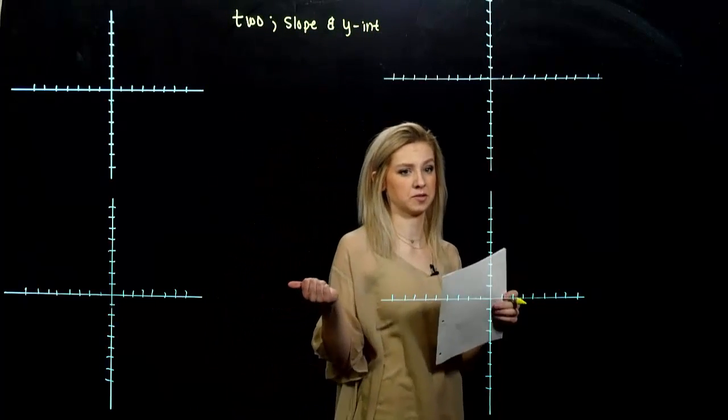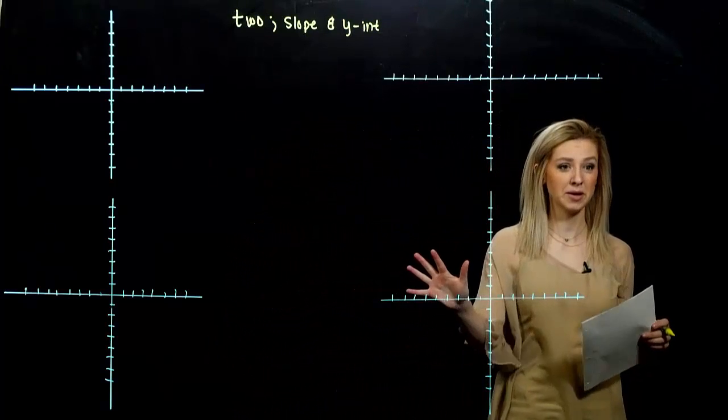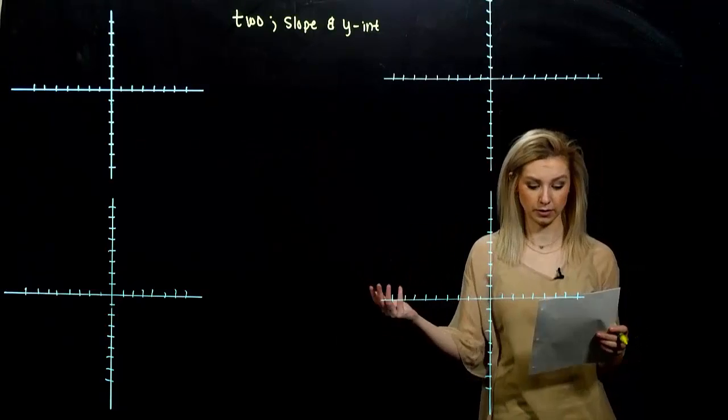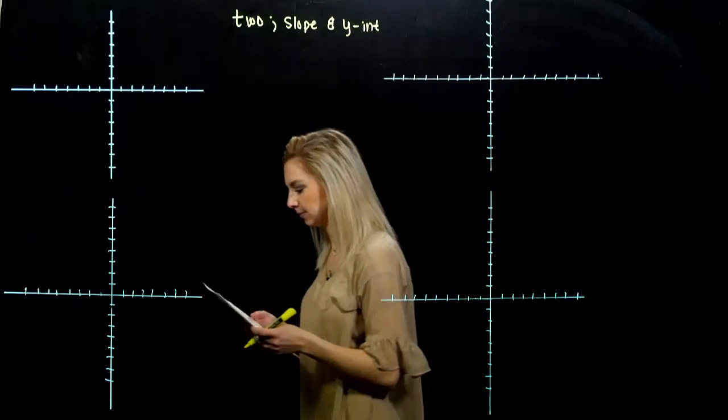We can also graph a line if we know the slope and the y-intercept. If it's in the y equals mx plus b form, we're going to be able to graph really quickly. And if we're just given the point of the y-intercept and the slope, we can also graph that really fast.